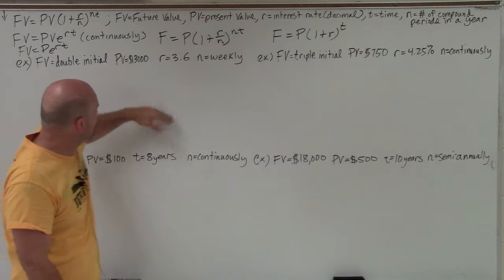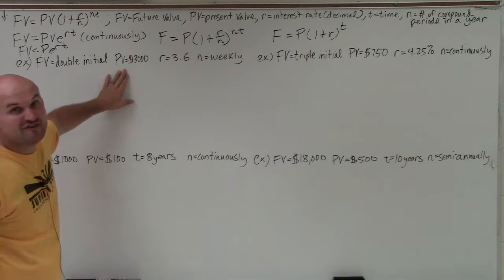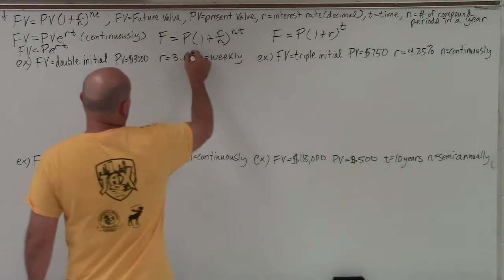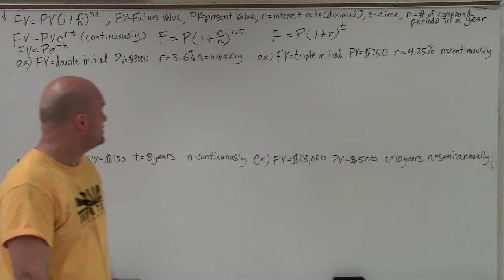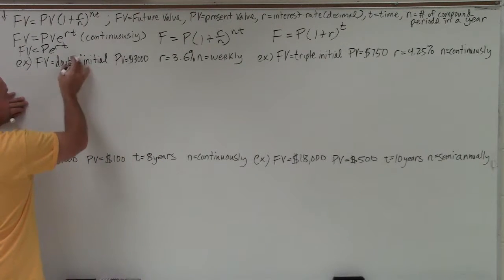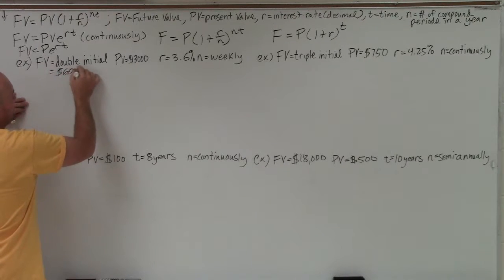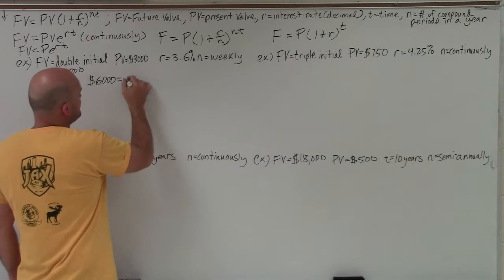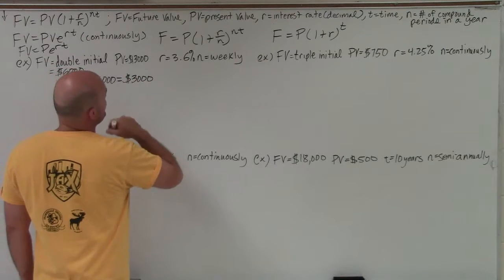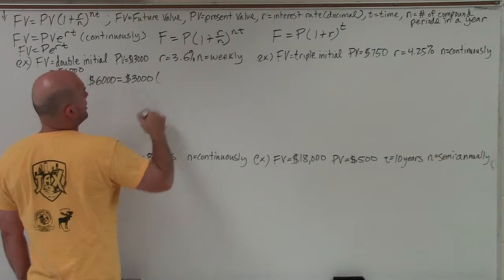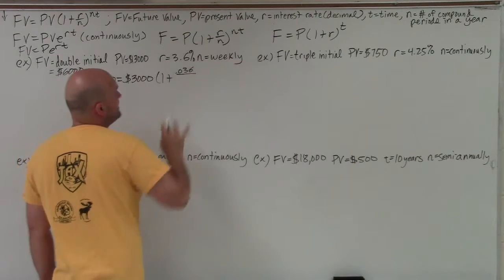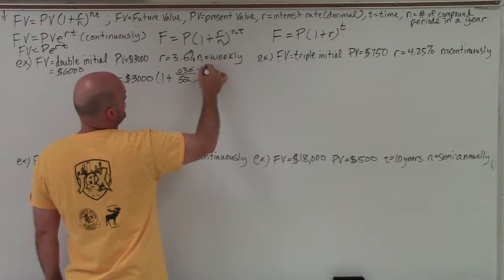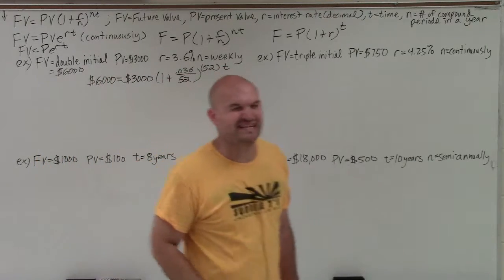So this is a very common type of problem. They say we're giving a present value of $3,000. We want your final value to be double the initial amount. And we are going to invest your money at 3.6% weekly. How long is it going to take for your money to double, basically? So if we know our present value is $3,000, for $3,000 to double, that just means that's going to be $6,000. So what I'm going to do is take $6,000 equals my present value of $3,000 times 1 plus 0.036 divided by weekly, so there's 52 weeks in a year, raised to 52. And then t is what we do not know. So we need to solve for t.